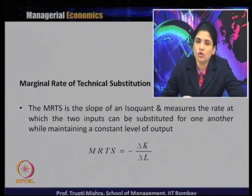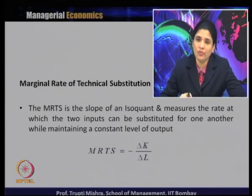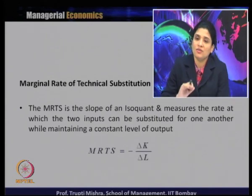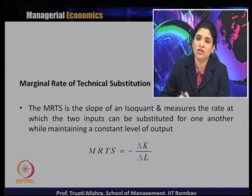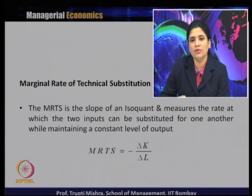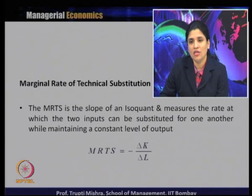The MRTS is also the slope of the isoquant. If you remember the concept of marginal rate of substitution used in consumer theory, the counterpart of MRS is marginal rate of technical substitution in production analysis. Marginal rate of technical substitution is nothing but the slope of isoquants — it is the rate at which two inputs can be substituted for one another while maintaining a constant level of output. MRTS is the change in K with respect to change in L.